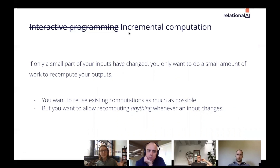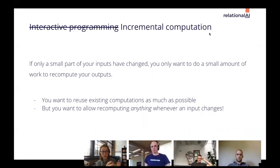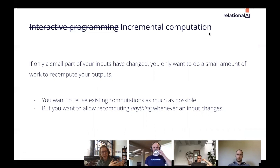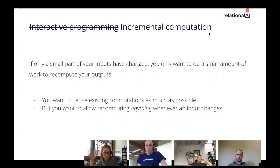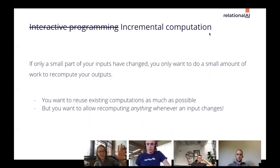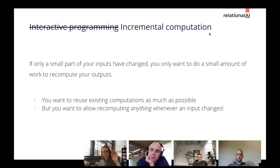This idea is referred to as incremental computation — if only a small part of the inputs to your process have changed, you only want to do a small amount of work to recompute your outputs. The time to regenerate outputs should be proportional to the size of the change to inputs. You want to reuse computations that aren't affected by the change, and correctly recompute everything that was affected.